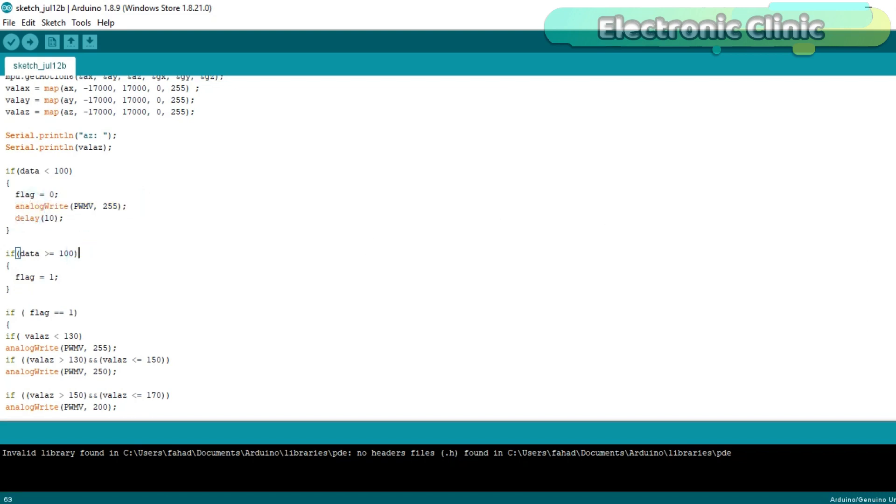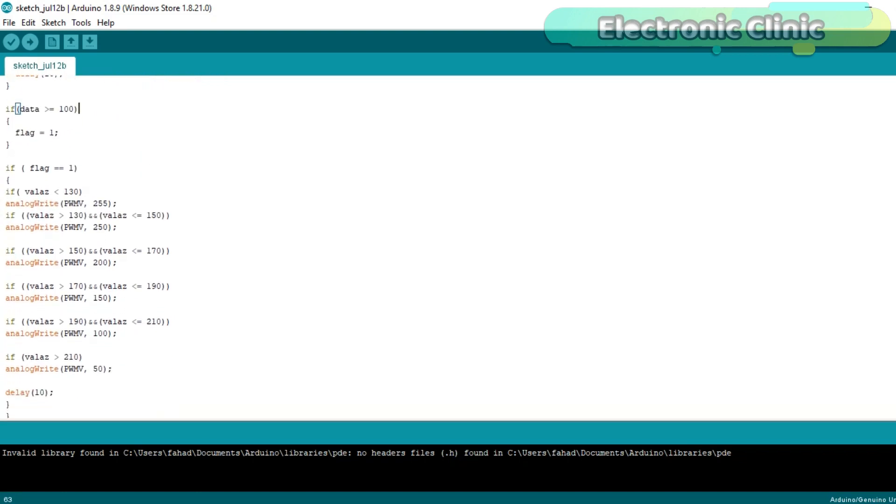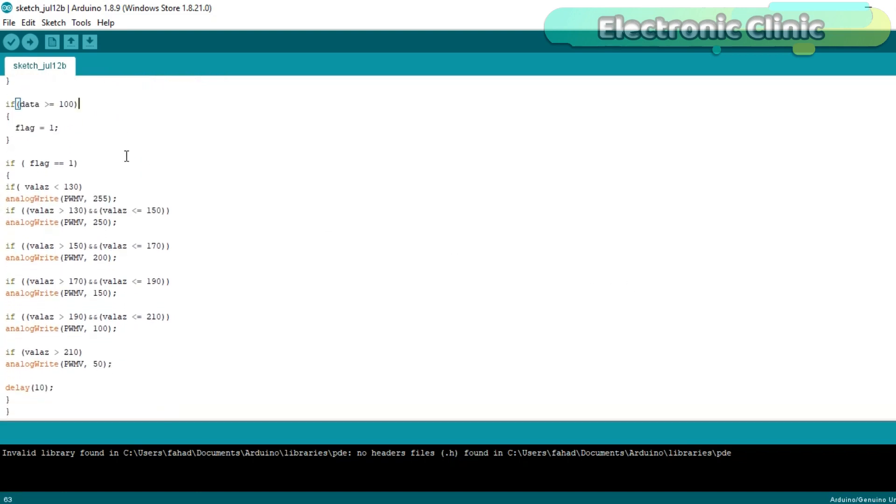If the value is greater than 100, then flag is equal to 1, which means to activate the speed control system. These conditions are used to check the angle of the MPU6050 and then accordingly control the speed of the electric bike motor.